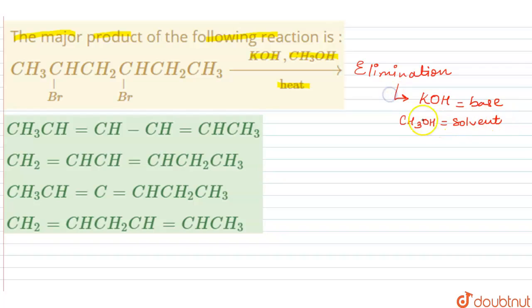Hence it would definitely favor an elimination mechanism. So let us write down our reactant. Our dear reactant is with one, two, three, four, five, and six carbon atoms. So CH3-CH-CH2-CH-CH2-CH3, and we are having a bromo group on the second and on the fourth position.